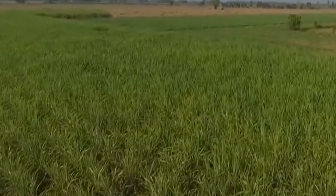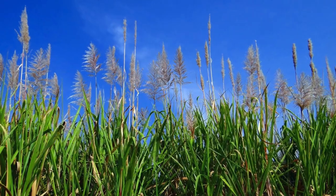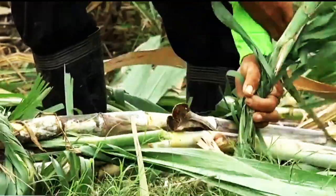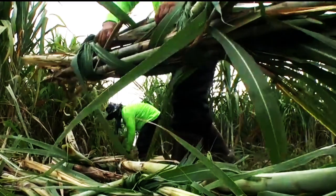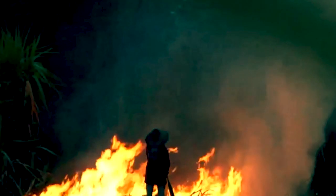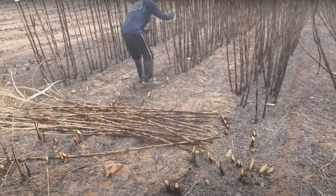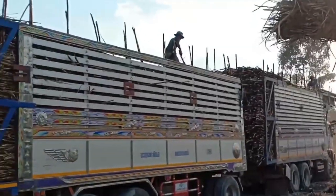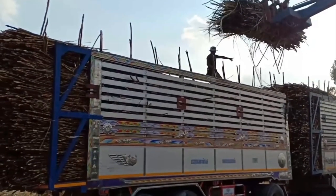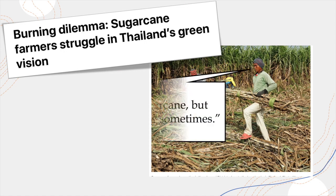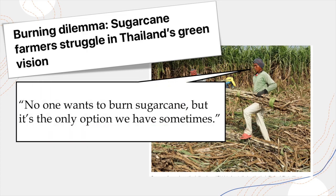If you've never seen sugarcane up close, it's a stalk with a lot of rough leaves. When harvesting, all that is desired is the stalk where the cane juice is. Burning a sugarcane field is a quick and low-cost way to remove the leaves, leaving only the charred sugarcane stalk, making it easier to cut and transport to factories. It's a way to save on labor costs. No one wants to burn sugarcane, farmers say, but it's the only option we have sometimes.